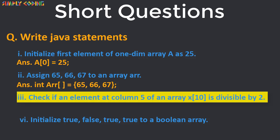Next we need to write an expression in if statement. Here element at column 5 means element at index 4. So the statement is if x within brackets 4 percent 2 equal to equal to 0. This is our check for even numbers.